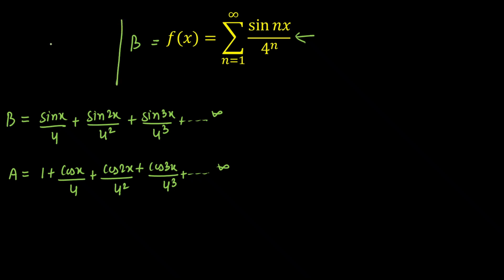Basically, our Euler's formula states that e raised to the power iota theta can be written as cos(theta) plus iota sin(theta). Through this, it will be very easy to solve f of x, that is the given series sin(nx)/4^n with summation from n equals 1 to infinity. I'm going to convert this into the e raised to power iota theta format.